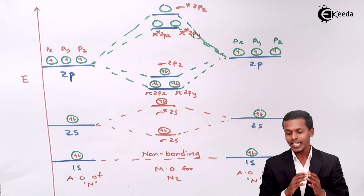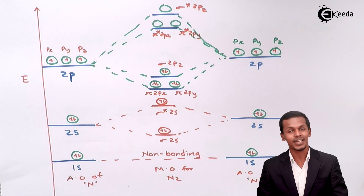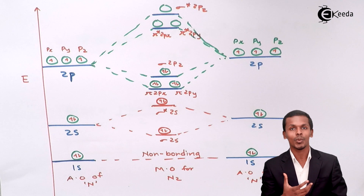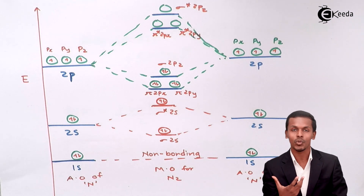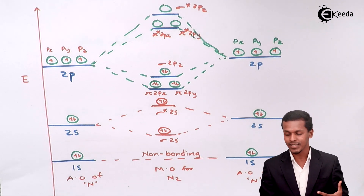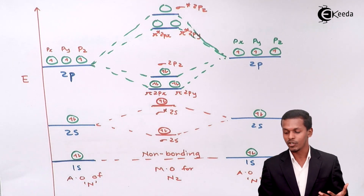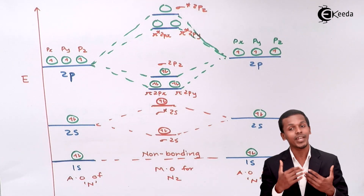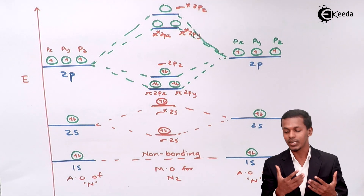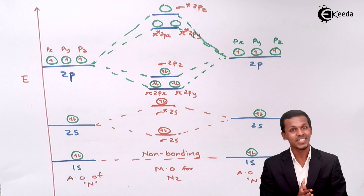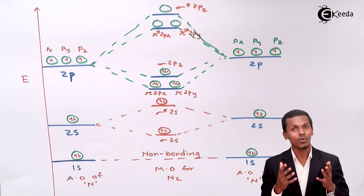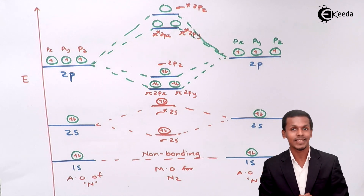So this is the molecular orbital diagram for the nitrogen molecule. Not only the energy levels, but we have also learned about the bond order, the electronic configuration, and why pi 2px and pi 2py have lower energy compared to the sigma 2pz orbital. This is what we have covered in this lecture.